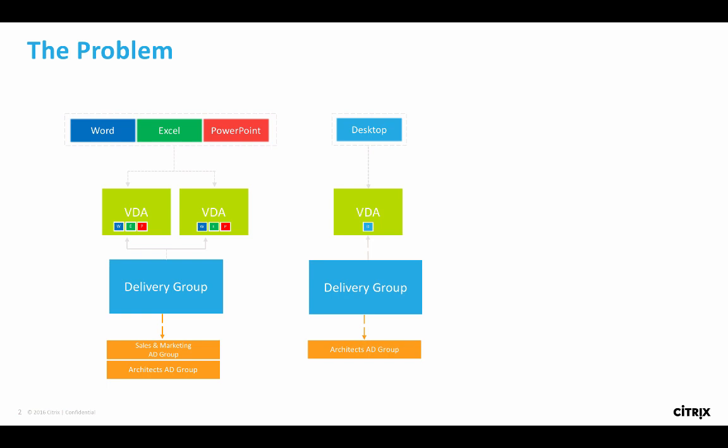This challenge is more an admin issue. So how can we optimize that admin experience? How can we potentially reduce the VDA workloads that are needed for this, and how do we reduce the number of delivery groups? Because as you scale this out, we complicate things by needing more and more delivery groups and more VDAs. That essentially is the challenge we have today, and we're going to walk through how we're going to address that with app groups and tagging.